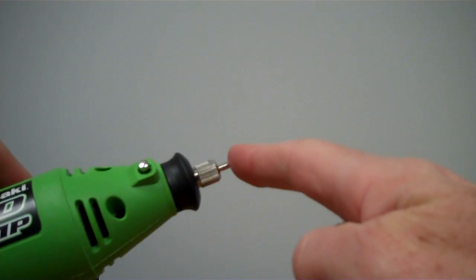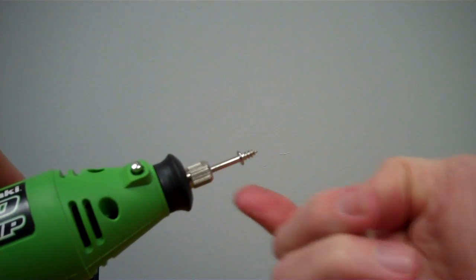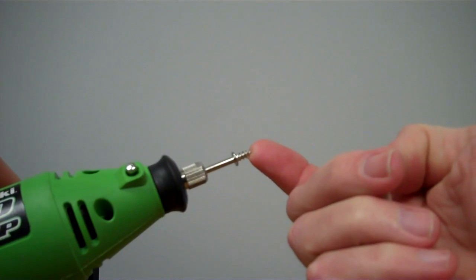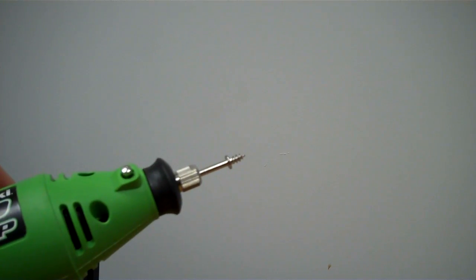This first mandrel basically has a shaft and then a threaded end, and that threaded end is pointy, kind of like a wood screw.